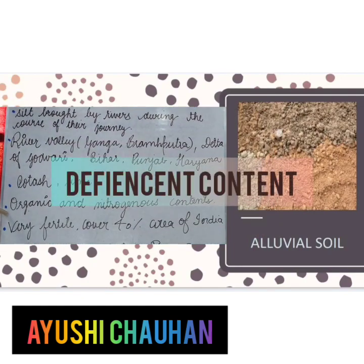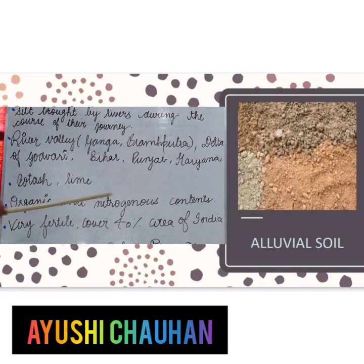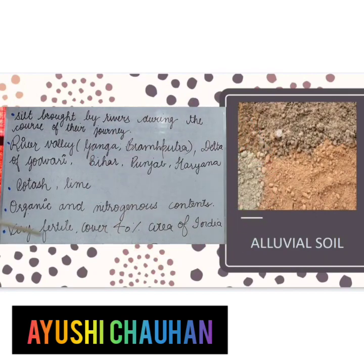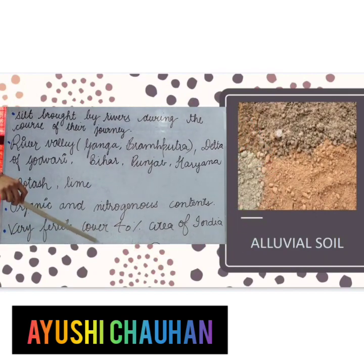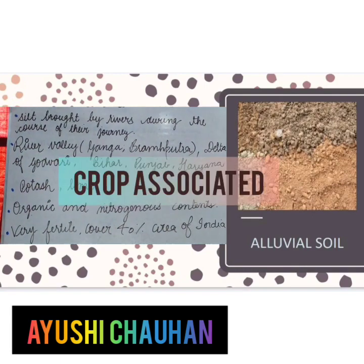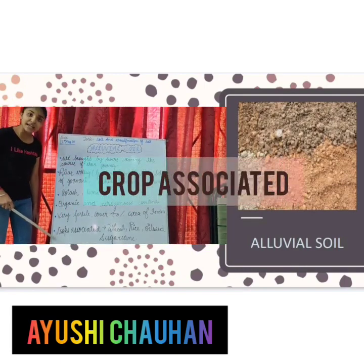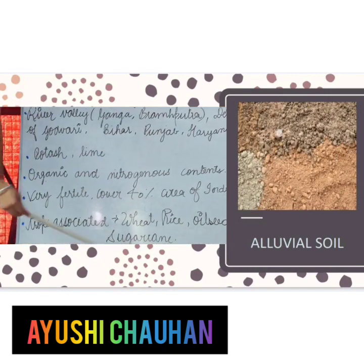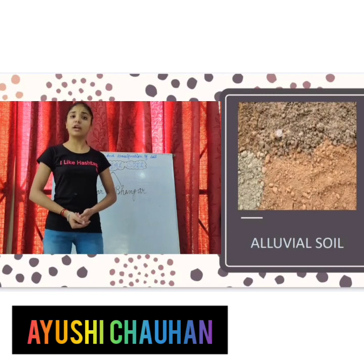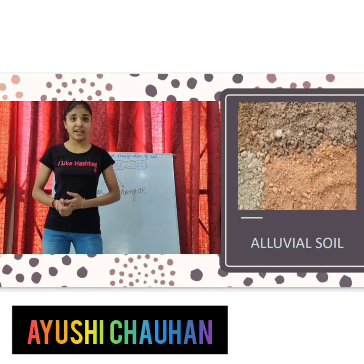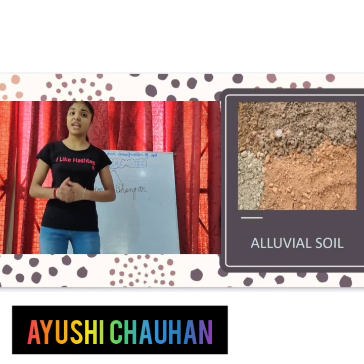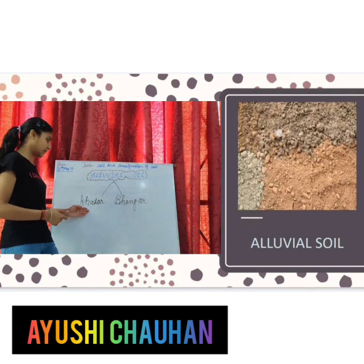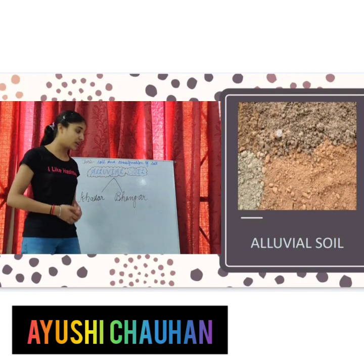Deficient content: organic and nitrogenous content. Main features of alluvial soil: very fertile, covers 40% of the area of India. Crops associated: wheat, rice, oilseed and sugarcane. Apart from the soil, particles of grain are described according to their age as well. Locally, the new alluvial soil is called Khadar and the old alluvial soil is called Bangar.